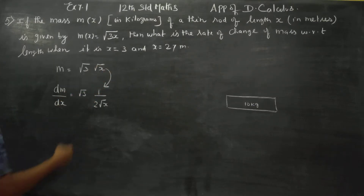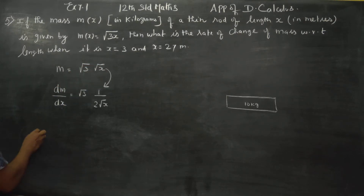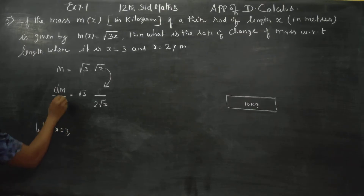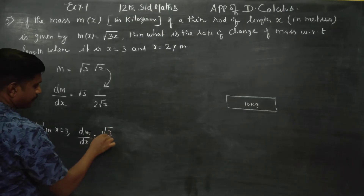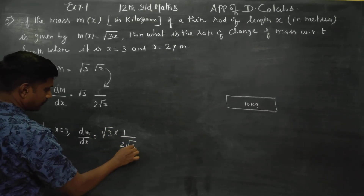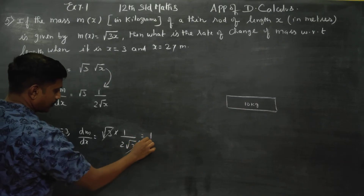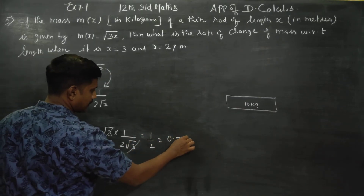When x is equal to 3 meters, we substitute into the formula. dm/dx = √3 · 1/(2√3). Root 3 and root 3 cancel out, giving 1/2.